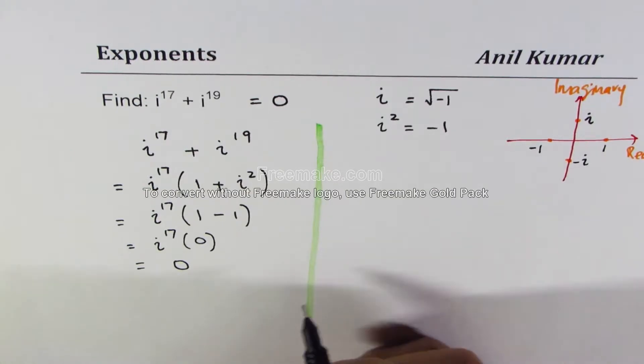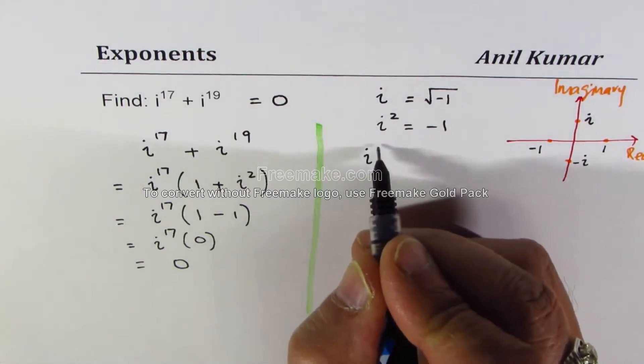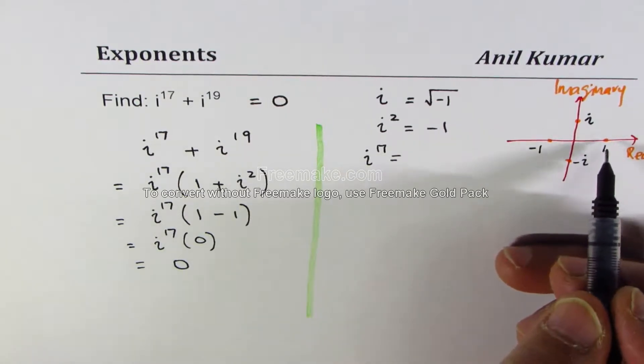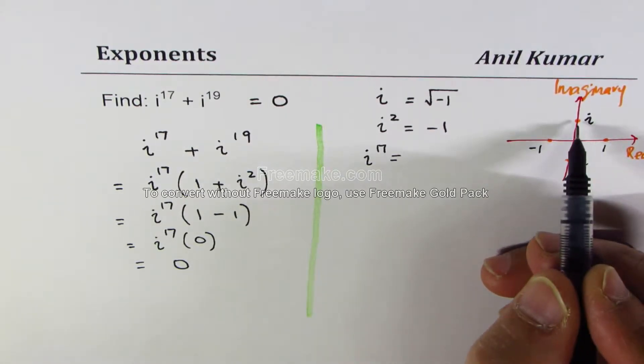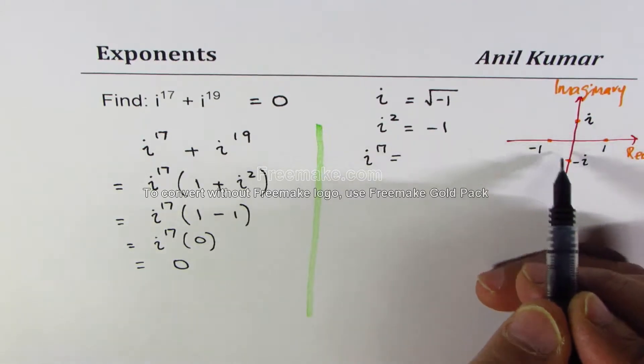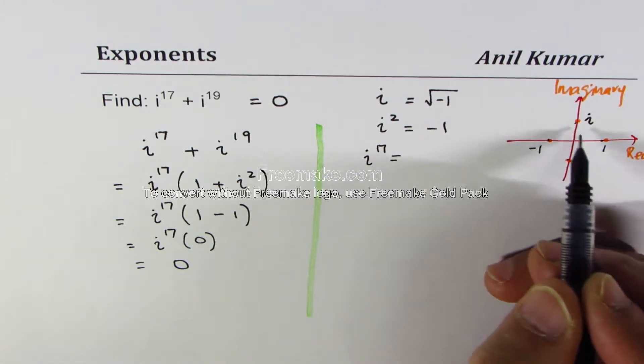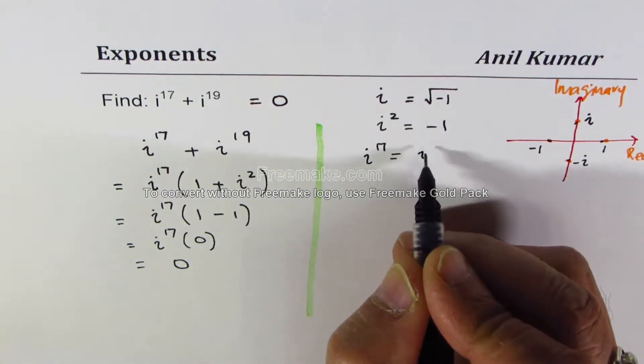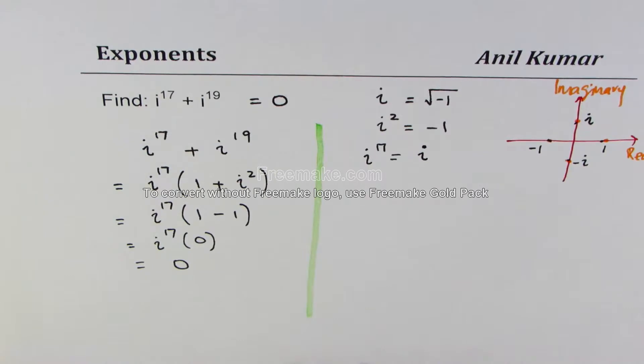You could always find what is i to the power of 17 equals to. So this is like power of 0, this is i to the power of 1, 2, 3, 4, 5, 6, 7, 8, 9, 10, 11, 12, 13, 14, 15, 16, and 17. So i to the power of 17 is actually equal to i.